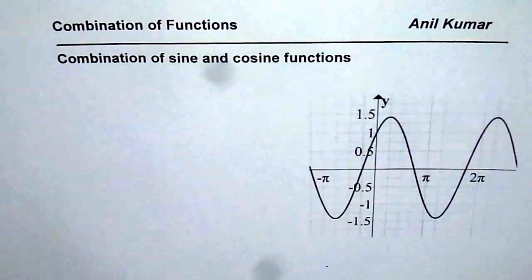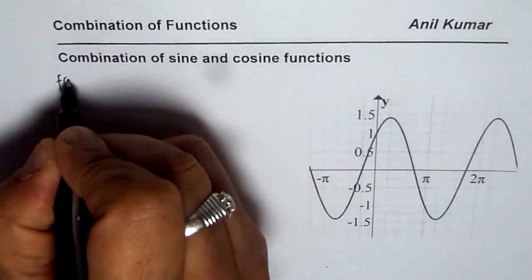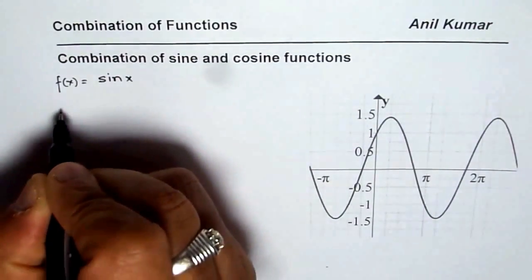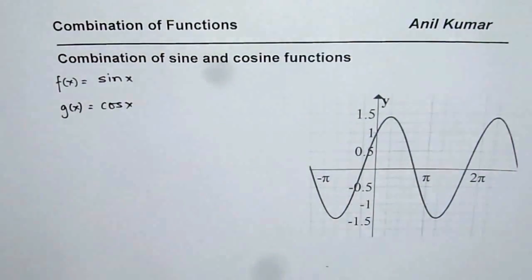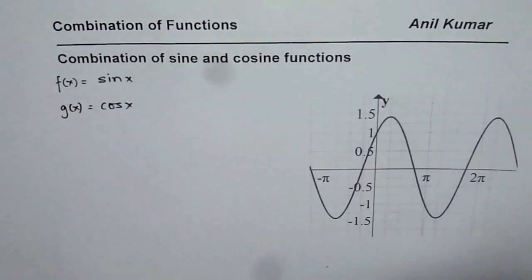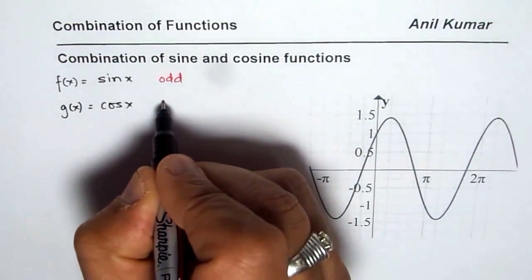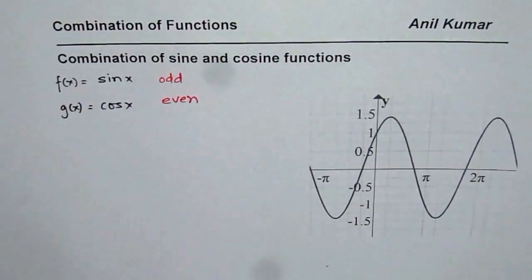I am Anil Kumar and in this video we will understand combination of trigonometric functions. I have taken combination of sine and cosine function. Let us say that we have a parent function f(x) equals sine x and another function g(x) equals cosine x. As you know, sine x is an odd function and cosine x is an even function. These are a few characteristics of these functions.